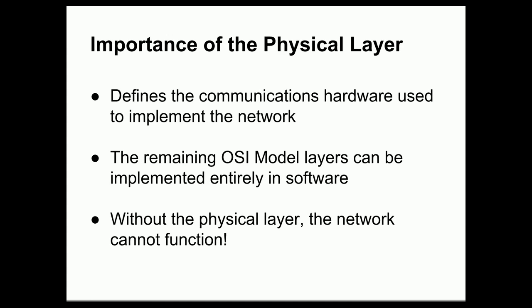This layer is highly important — it could be argued that the physical layer is the most important layer of any networking system, simply because none of the other layers work without it. This layer defines the communications hardware used to implement the network, and every other layer of the OSI model can be implemented on top of it, technically entirely in software. The physical layer provides the hardware on which that software runs and allows the network to function.